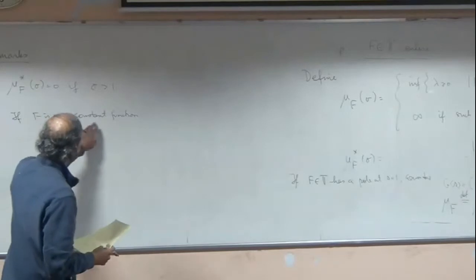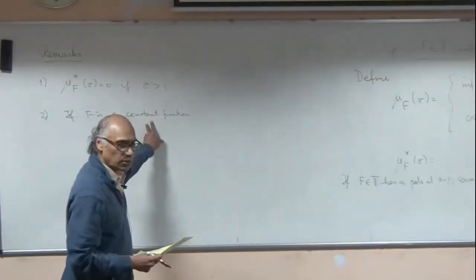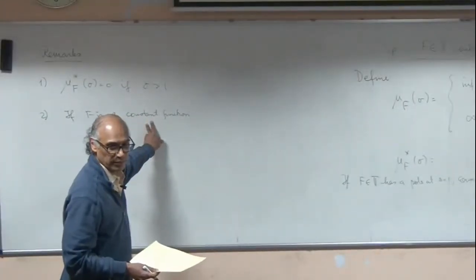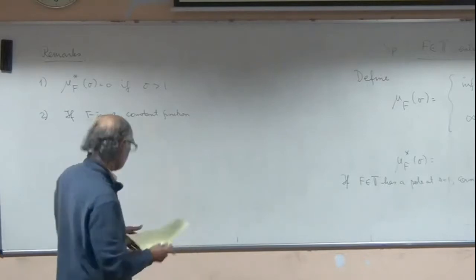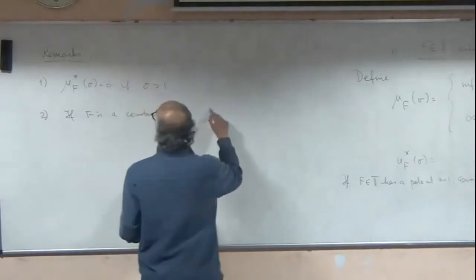If F is a constant function - which by the way in the Selberg class means it's one, but in this T you've got all constant functions - if F is a constant function, then both mu_F and mu_F* are zero.